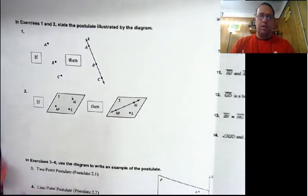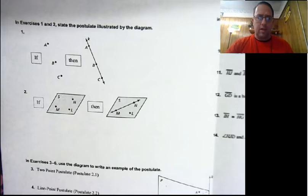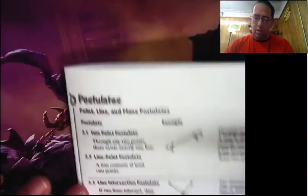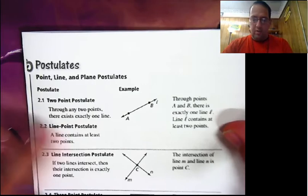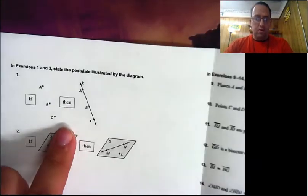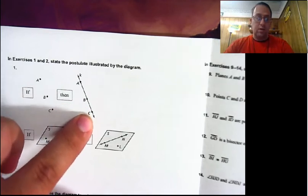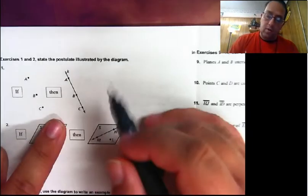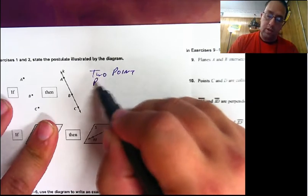Let's open this up. First, state the postulate illustrated by the diagram. Our first one: if we have some points — three points — then we have a line going through the points, line K. Which postulate could it be? If we have some points, then we can draw a line through the points. Through any two points there exists exactly one line is the best one. Now, there are three points in the diagram, but there is only one line going through those points. I couldn't have line K going through these points and line F going through them as well. There's only one. So this is still the two-point postulate.